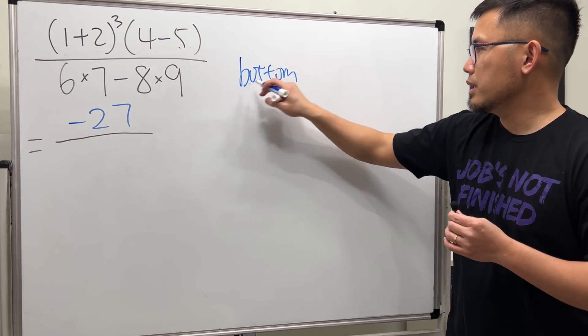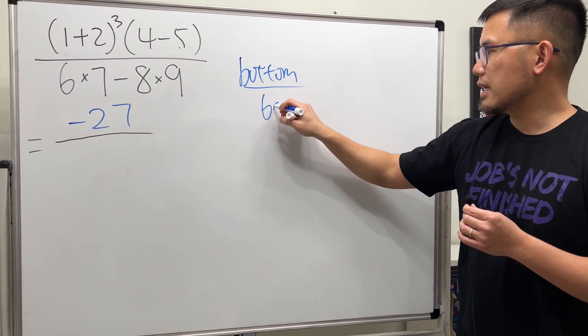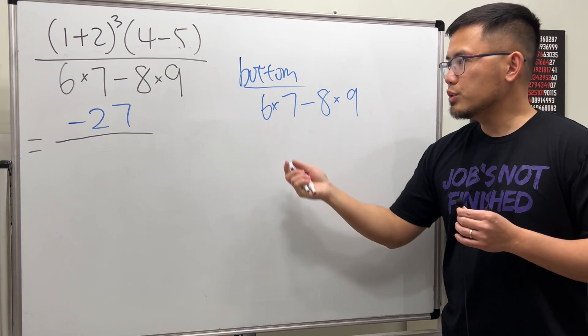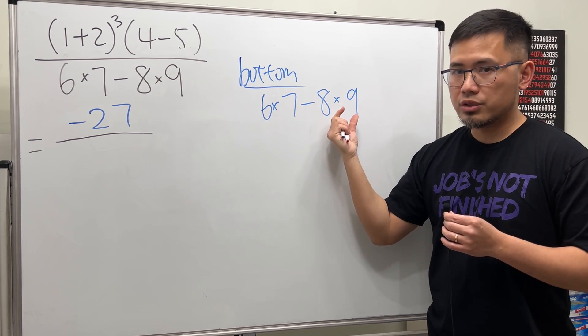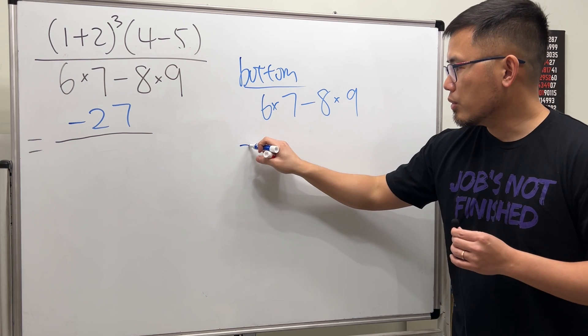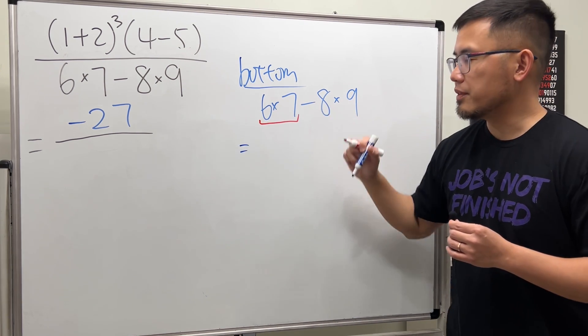Now we have to work out the bottom. So let me write this down right here real quick. We have 6×7 and then minus 8×9. So we just have multiplication and then subtraction. Remember, we multiply first before we subtract.